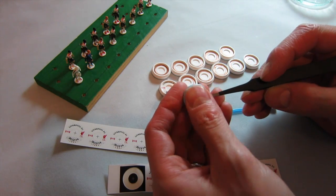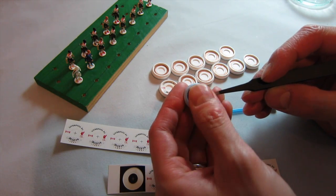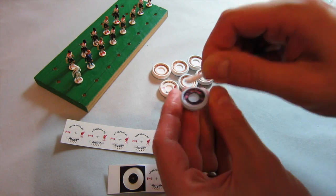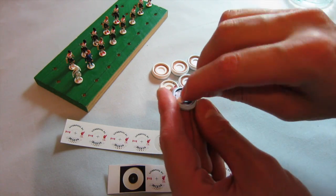I'm doing the same thing for the goalkeeper, the flicking goalie base. Again, I'm using the Q-tip because I don't want to scratch the paint.